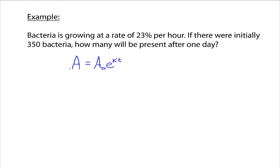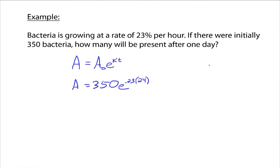So our formula looks like this. We're looking for A. We know A naught is 350. K is the growth rate — and this is exponential growth because bacteria is growing, it's increasing. So 23% is the growth rate; we change that to a decimal: 0.23. T is time. We want after one day, and it's growing at 23% per hour, so T is in hours. One day has 24 hours, so the exponent on E is 0.23 times 24.